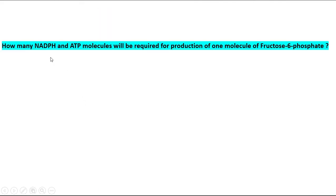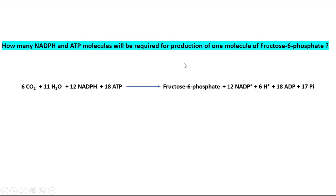Ribulose-5-phosphate is phosphorylated into ribulose-1,5-bisphosphate by ATP in the presence of phosphoribulokinase enzyme. A question frequently asked in examinations is: how many NADPH and ATP molecules are required for production of one molecule of fructose-6-phosphate? The answer is 6 CO2, 12 NADPH, and 18 ATP will be required.